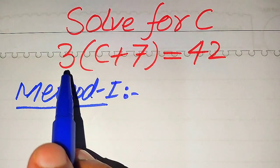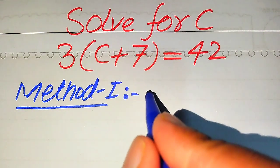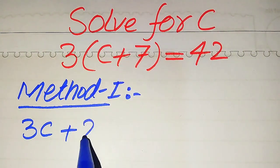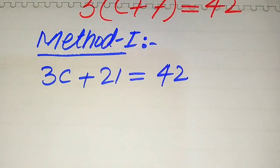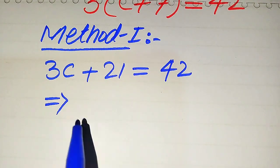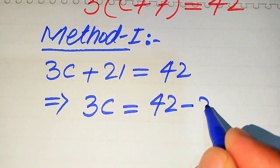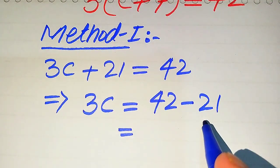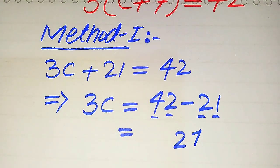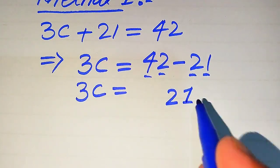In the first method, we directly multiply this 3 on both of the two values. When we multiply 3 by c we get 3c, and when we multiply 3 by 7 we get 21, so it becomes 3c plus 21 equals 42. In the next step, we move plus 21 to the right hand side, giving us 3c equals 42 minus 21, which equals 21.